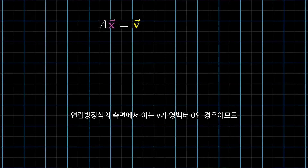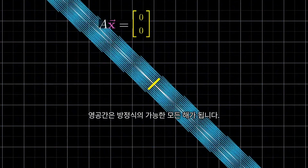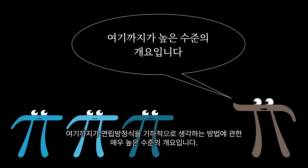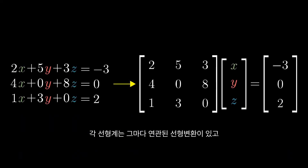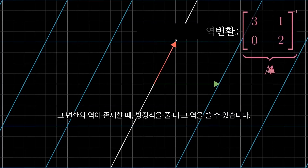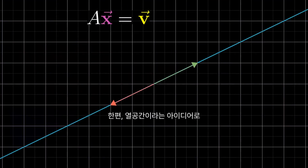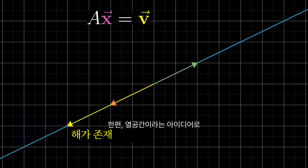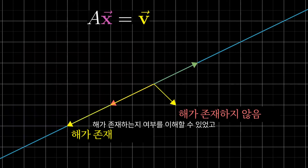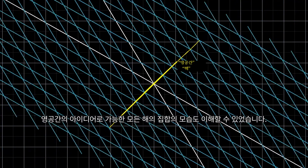This set of vectors that lands on the origin is called the null space, or the kernel of your matrix. It's the space of all vectors that become null, in the sense that they land on the zero vector. In terms of the linear system of equations, when v happens to be the zero vector, the null space gives you all of the possible solutions to the equation. So that's a very high-level overview of how to think about linear systems of equations geometrically. Each system has some kind of linear transformation associated with it, and when that transformation has an inverse, you can use that inverse to solve your system. Otherwise, the idea of column space lets us understand when a solution even exists, and the idea of a null space helps us understand what the set of all possible solutions can look like.